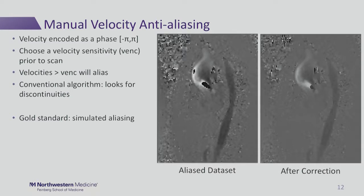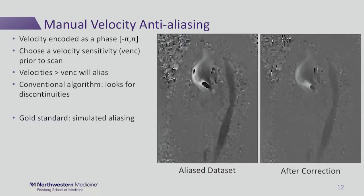For anti-aliasing, we know that the velocity is encoded as a phase between minus pi and pi. We must choose a velocity encoding sensitivity, or VENC, prior to the scan based on the anticipated maximum velocity, so any velocity that exceeds this chosen value will alias. Our conventional algorithm looks for discontinuities in each velocity direction and corrects where jumps occur. The gold standard uses simulated aliasing by artificially lowering the VENC in datasets. The conventional algorithm does a reasonable job but misses a few voxels in the jet of the ascending aorta.